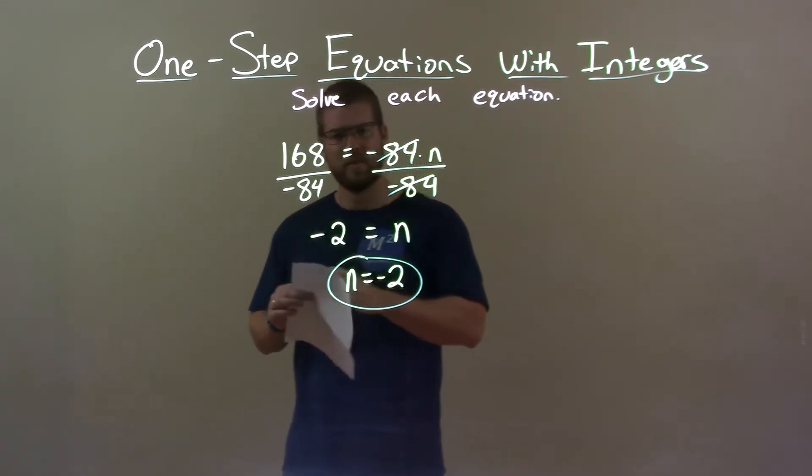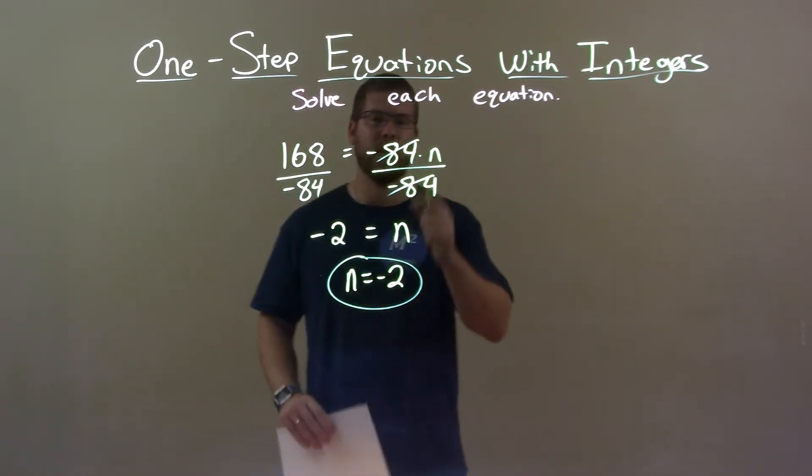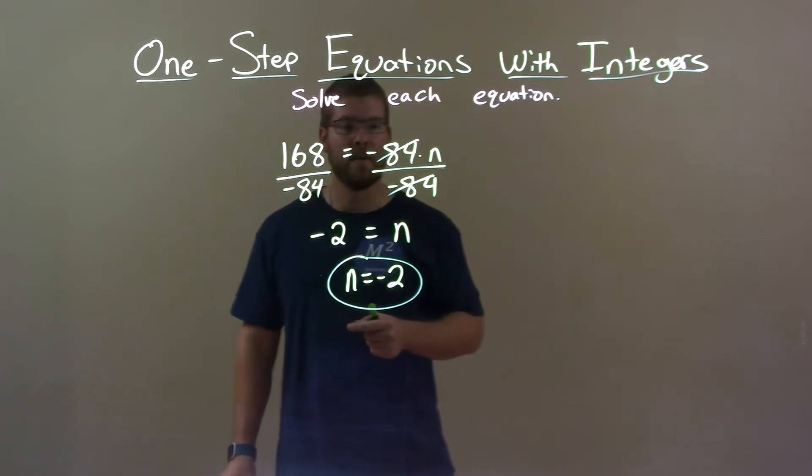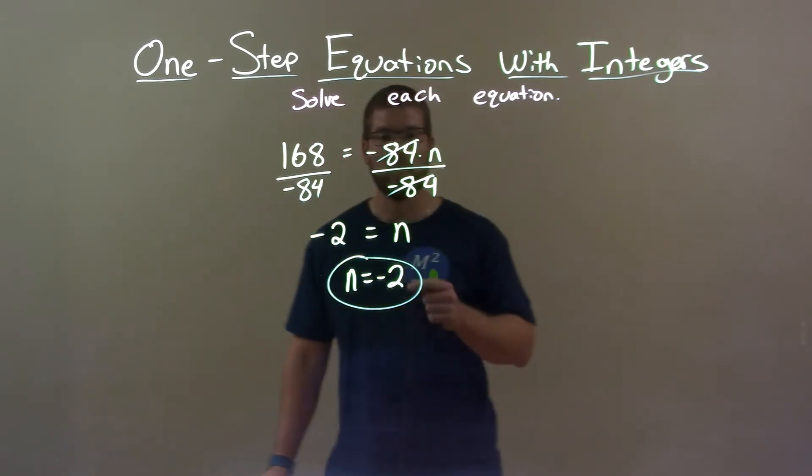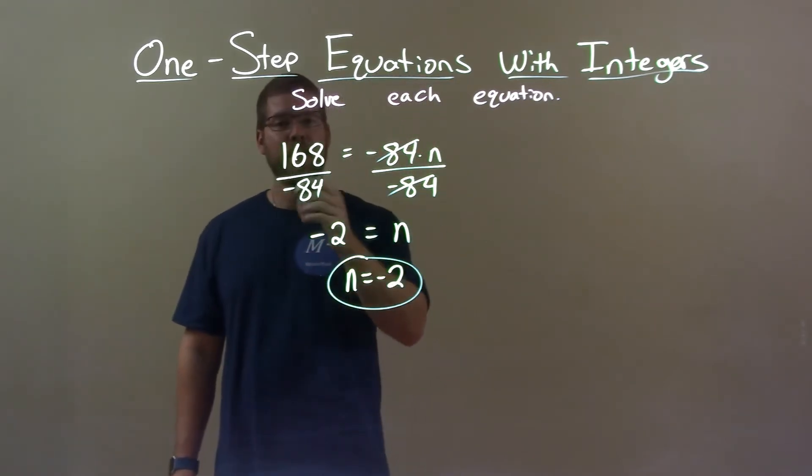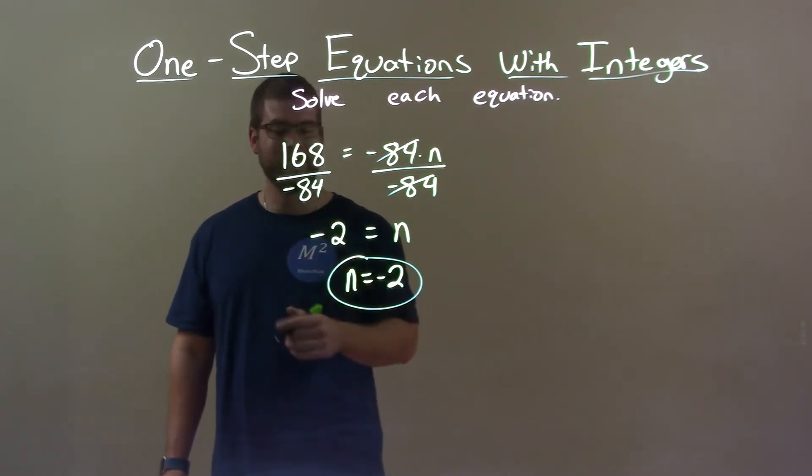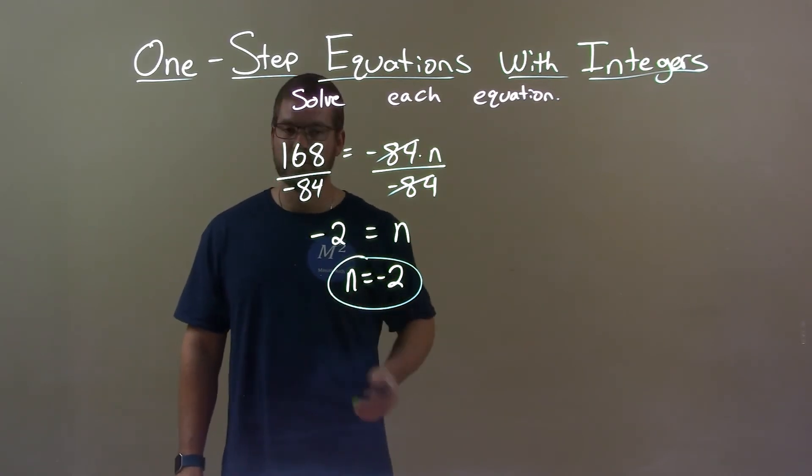Quick recap, we're given 168 equals negative 84 times n, and we have to solve for n. I divided both sides by negative 84 to get n by itself on the right. 168 divided by negative 84 is negative 2, and so we got our final answer, n equals a negative 2.